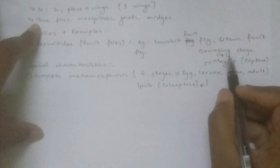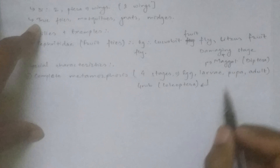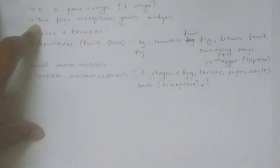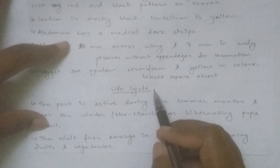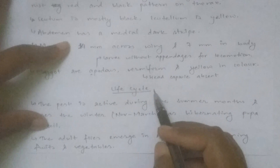The larva is the damaging stage of this pest. In Diptera, the larval stage is a maggot, which is destructive in nature and causes damage to fruit.